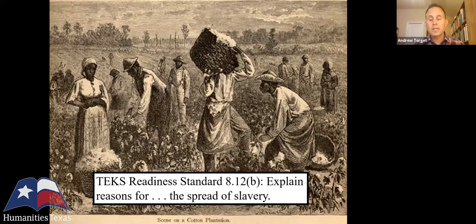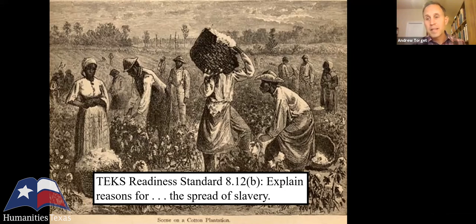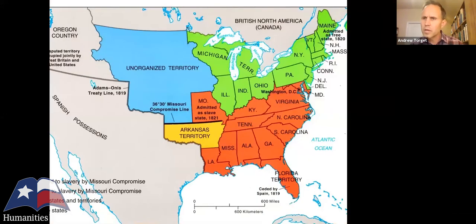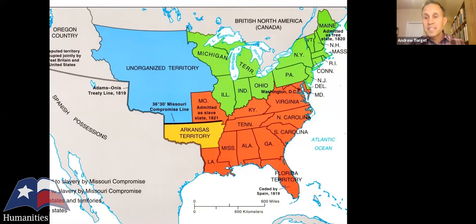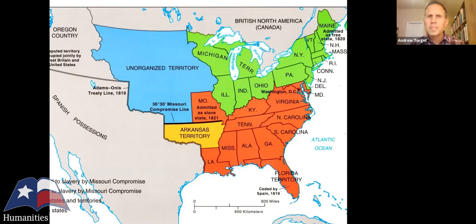Slavery expanded dramatically as the Cotton Revolution expanded. TEKS standard 8.12b asks us to explain the reasons for the spread of slavery — and this massive economic expansion under cotton is precisely why slavery also expanded geographically so rapidly. Mississippi became a state two years after the Cotton Revolution began, in 1817; Alabama followed in 1819. Slavery wasn't just part of the economic system — it was infusing itself ever more deeply into the political system.